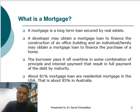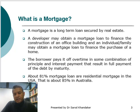In a mortgage, the payment generally includes some principal payment and some interest payment. The mortgage is a combination of payments which includes principal plus interest. About 81% of mortgage loans are residential mortgages in the USA, whereas in Australia it is about 85%.